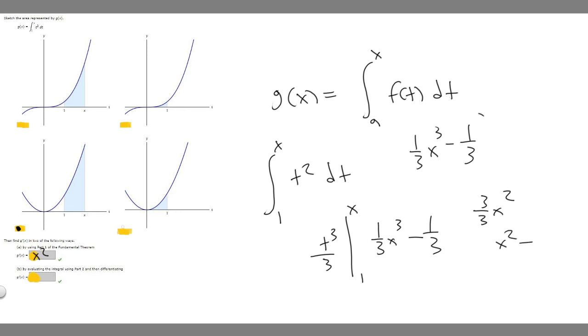And then minus whatever the derivative of 1 over 3 is, but it's a constant, so a derivative of a constant is just 0. You could minus 0, but it's the same thing as just x squared. So the answer to b is going to be x squared.